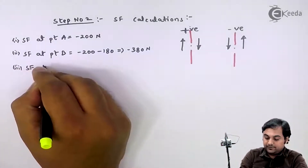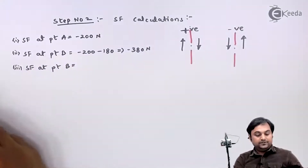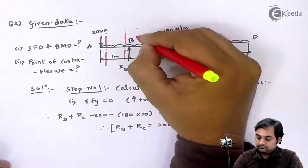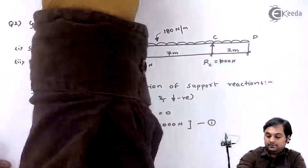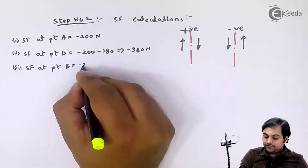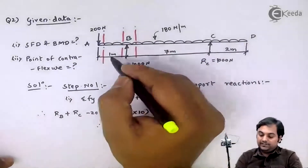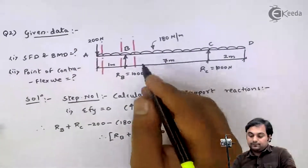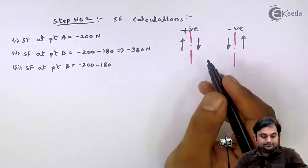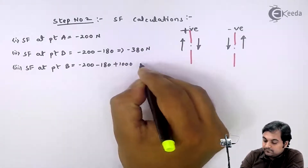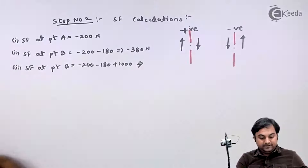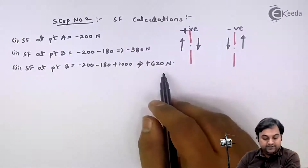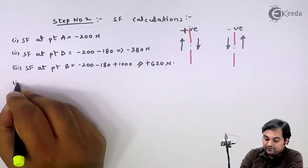Next, I will calculate SF at point B again, but now taking the section to the right of B. To the right: 200 Newton downward is minus 200, 180 into 1 is also downward so negative 180, and RB of 1000 Newton is upward so positive 1000. Calculating these terms gives SF at B (right) equals plus 620 Newton.